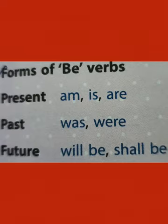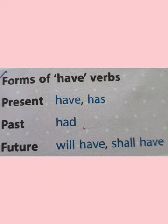Now, in forms of have verbs: has and have are used when we talk about the present; had is used for past tense; and will have, shall have are used for future tense.